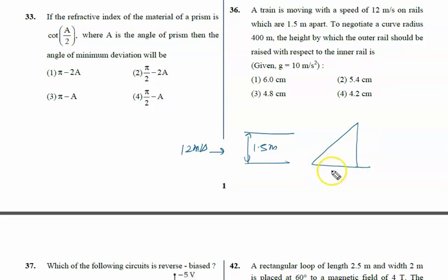The situation is: the rails are 1.5 meters apart, and the outer part is raised a little bit at an angle theta. The height is h. With this right angle triangle, tan theta is given by h upon 1.5.